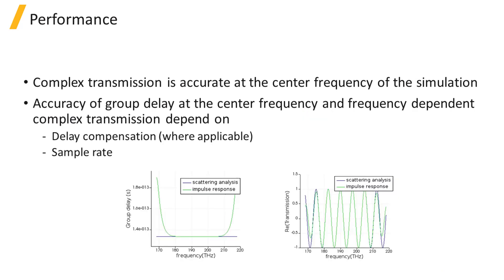When the waveguide is implemented with the recommended settings, the complex transmission value is accurate at the center frequency of the simulation. The accuracy of the group delay at the center frequency depends on the delay compensation and the sample rate. The accuracy of the frequency-dependent complex transmission also depends on these properties. We'll discuss these further in the delay compensation and sample rate units.